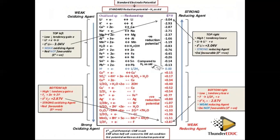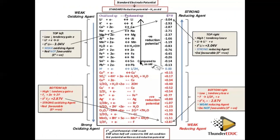Here is the standard electrode potential table — you can see hydrogen is in the middle. Above hydrogen means that substance is more reactive than hydrogen; below hydrogen means it is less reactive. If a substance is above hydrogen and more reactive, it is going to be the anode, producing electrons, while hydrogen will receive them. If below hydrogen, then hydrogen is at the anode and the substance below is the cathode.